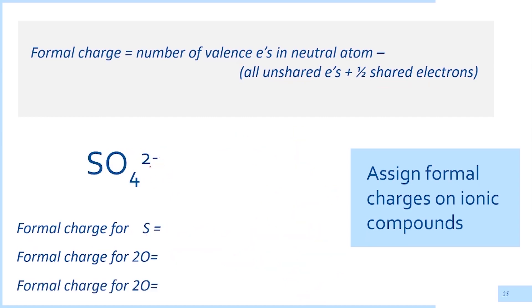Let's try to assign the formal charge for sulfate. We have one sulfur atom singly bonded to two oxygen atoms and doubly bonded to another two oxygen atoms. Notice that sulfur here deviates from the octet rule, with 12 surrounding electrons.